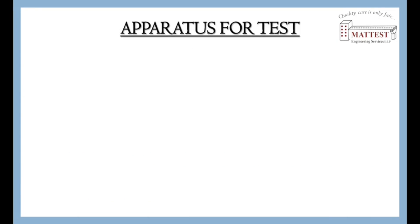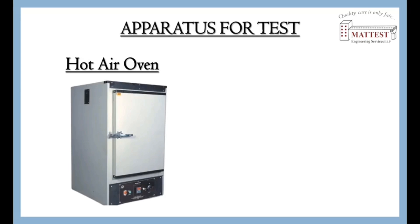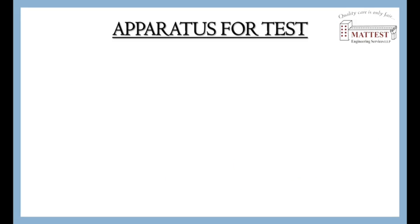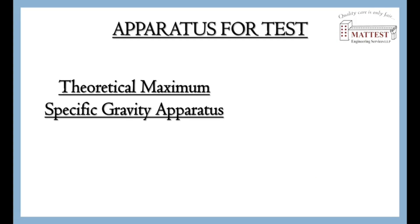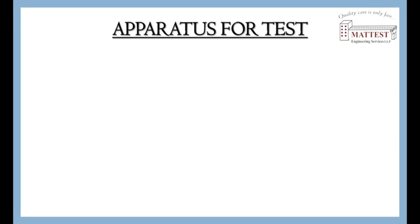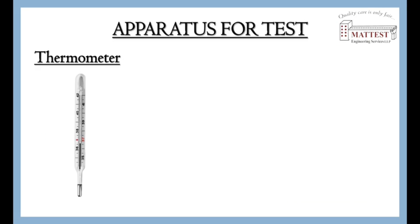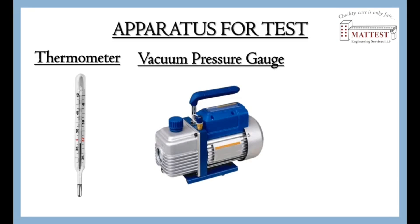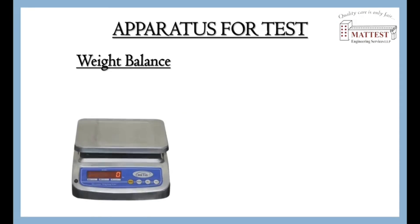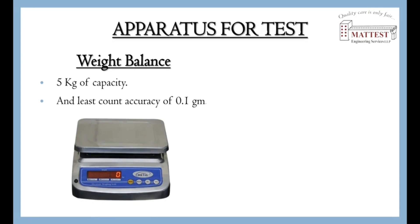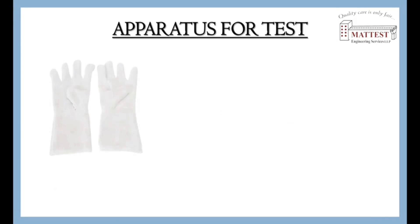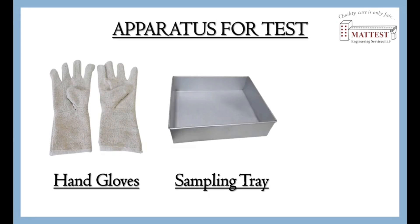Apparatus for test: Hot air oven, constant temperature bath, theoretical maximum specific gravity apparatus, thermometer, vacuum pressure gauge, container, weighing balance, hand gloves, sampling tray, and sampling bowl.